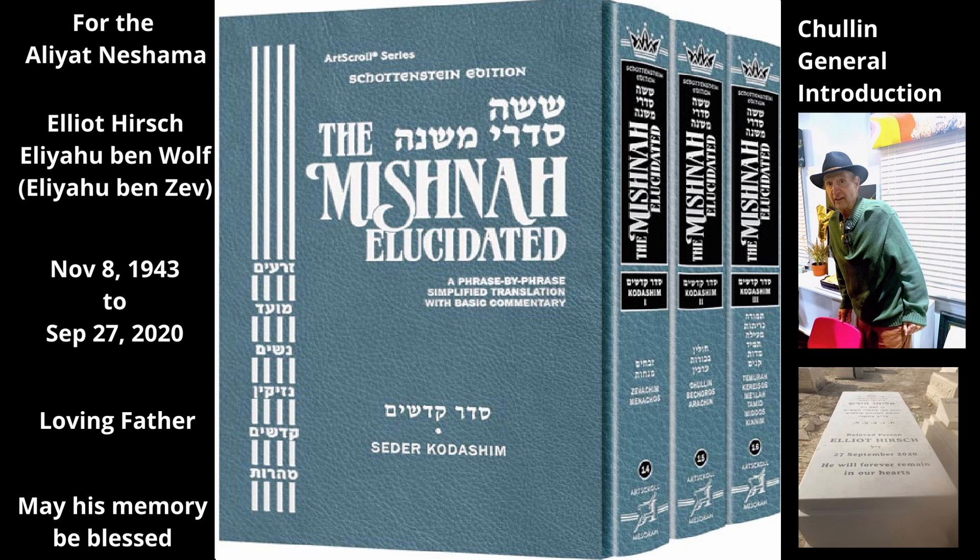In contrast to the other tractates in Seder Kedoshim, which teach the laws that apply to the Shechita and offering of Korbanos — which are sacred — Tractate Chulin deals with laws that apply to the Shechita, slaughtering, and use of ordinary, non-sacred animals.